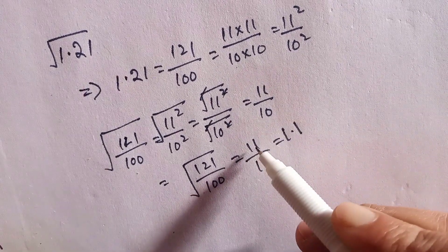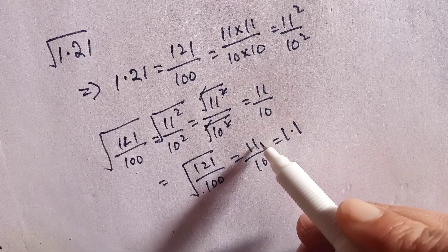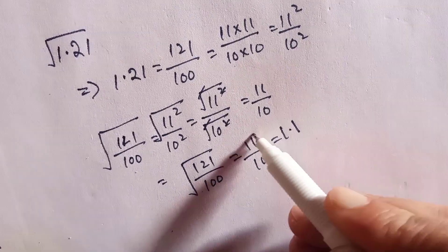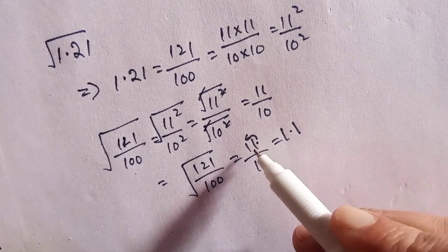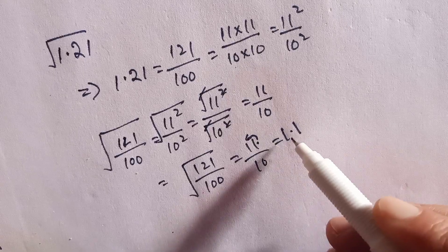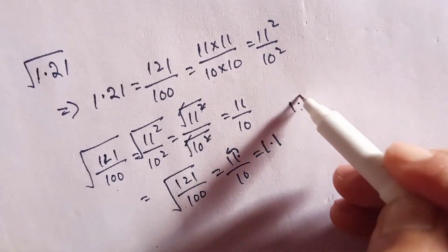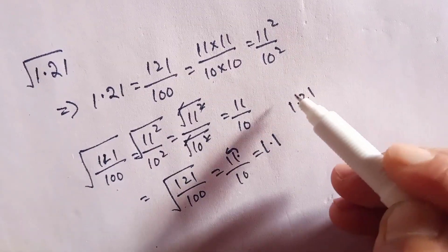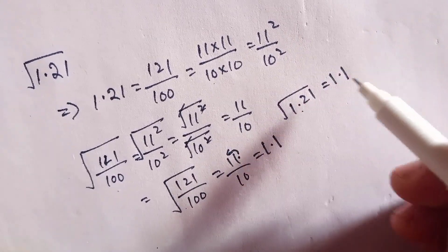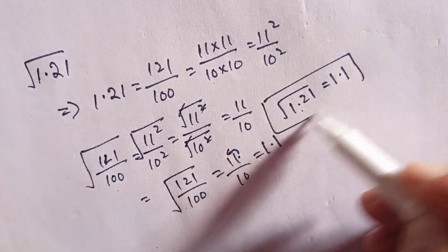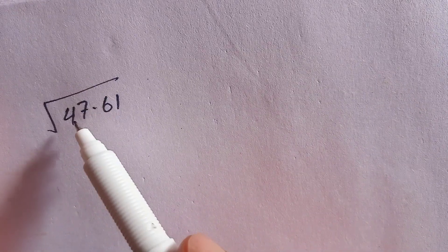11 over 10 equals 1.1, because whenever we divide 11 by 10, the decimal point moves one place to the left. So the square root of 1.21 is equal to 1.1 — that is the final answer. In the next example we are finding the square root of 47.61.